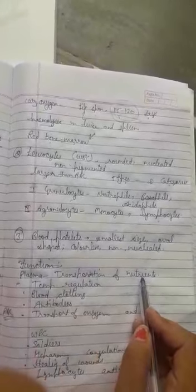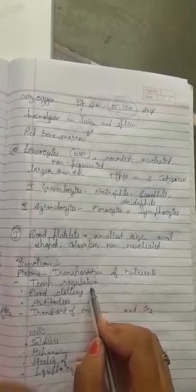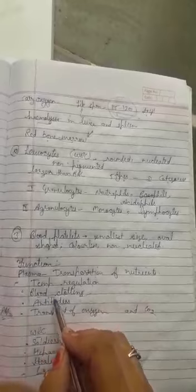Functions of blood: blood plasma transports nutrients in the body. Blood clotting occurs by combining antibodies.